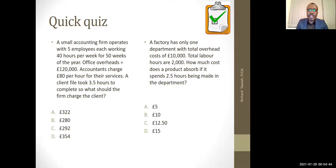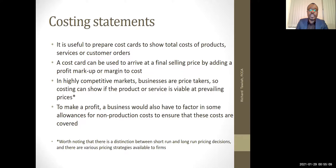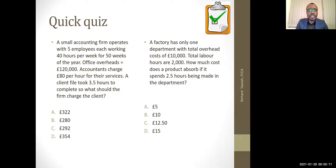So you can try the second one: a factory has only one department with total overheads of £10,000 and total labor hours of 2,000. Divide 10,000 by 2,000 to get the absorption rate. If it spends 2.5 hours in the department, multiply by 2.5 — you should get something around £12.50. So work through those calculations and see what you get.